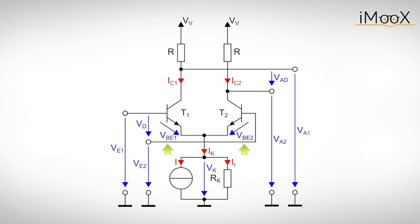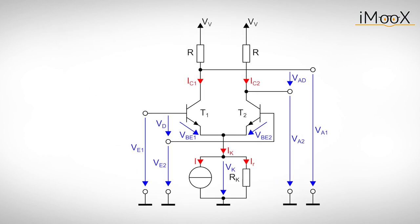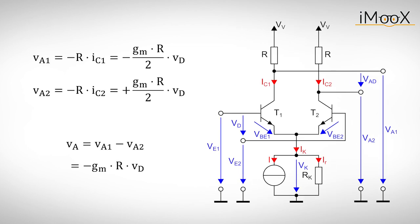With the base-emitter voltages, we can calculate the corresponding collector current via the transconductance GM. These currents generate a voltage drop at the resistors connected to the collectors, which in turn changes the output voltages. These are the output voltages if the differential amplifier utilizes one output only. A full differential amplifier uses both outputs, however.